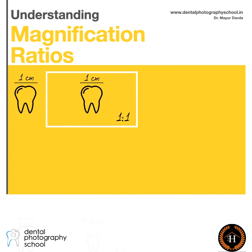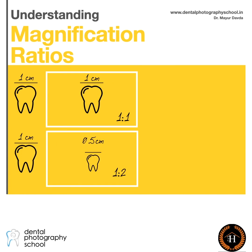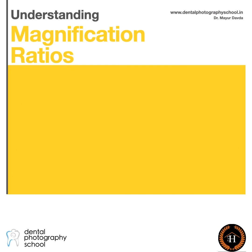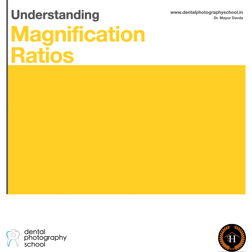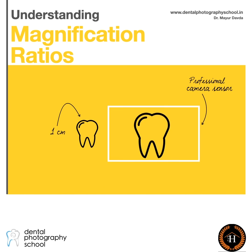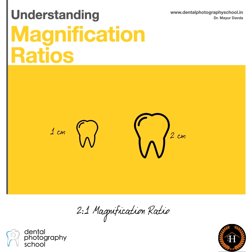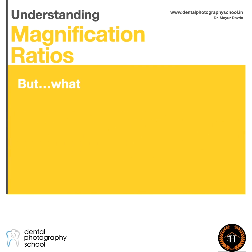So we saw what is 1:1, 1:2 and 1:4 Magnification Ratios. But what if the image on the sensor is larger than the subject? For example, if the subject is 1cm but the image on the sensor is 2cm, the Magnification Ratio is 2:1. In other words, the image on the sensor is twice the size of the original subject.